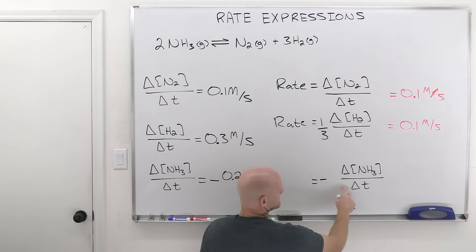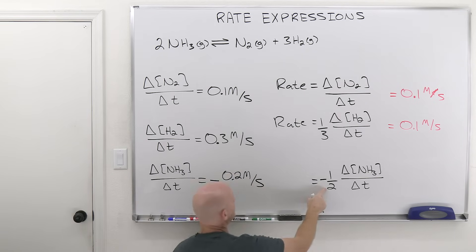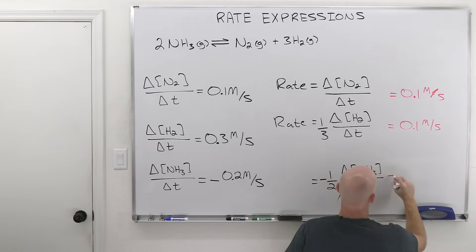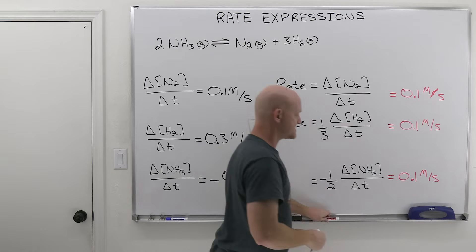And notice, negative one-half times negative 0.2, because again, this is negative 0.2 molar per second times negative one-half, is once again going to get us the same value here of 0.1 molar per second.